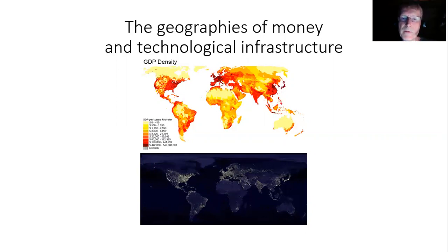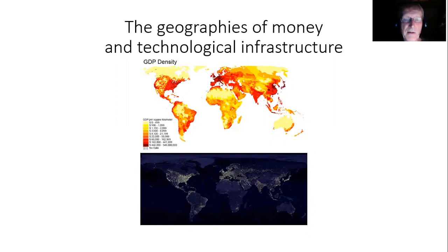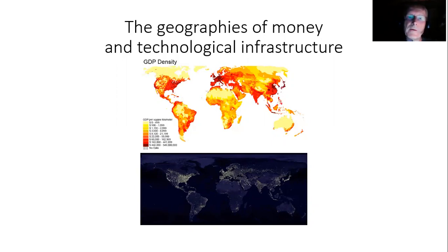The bottom map is not really a map. It's a composite satellite image made by connecting a number of satellite images of nighttime lights, showing basically what the planet looks like from a satellite. And these lights, I think of as being indicative of industrial infrastructure, or if you will, technology.